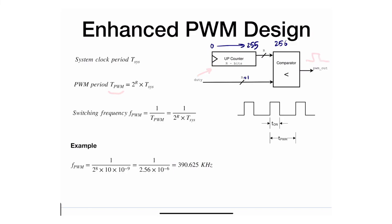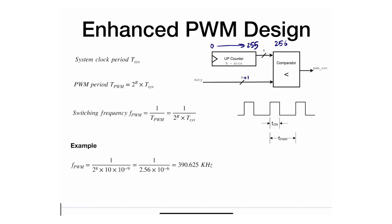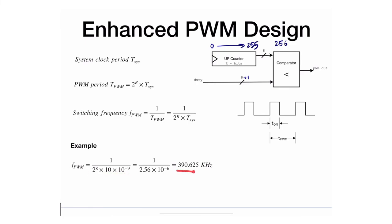For a quick example: with 8-bit resolution and a 100 MHz system clock (10 ns period), the switching frequency calculates to 390 kHz. We need to enhance the design to allow control of this frequency.